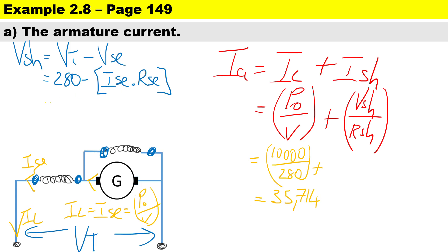That means we can substitute it: 280 volts, and Ise is 35.714, and the value of the series resistor is 0.25 ohms. That will give us our shunt voltage. Our shunt voltage will be 271.071 volts.